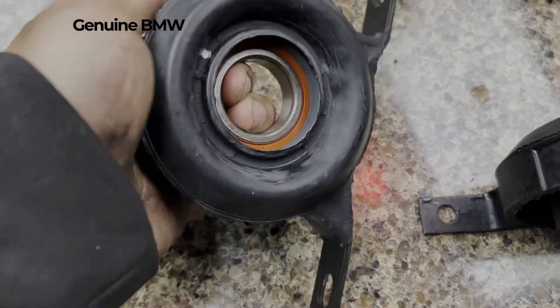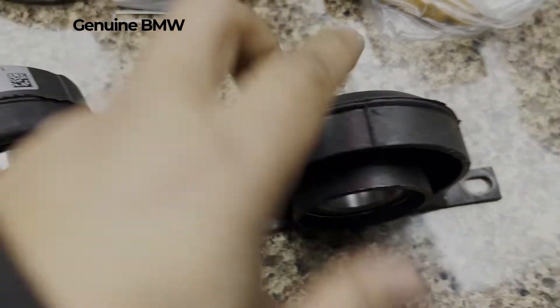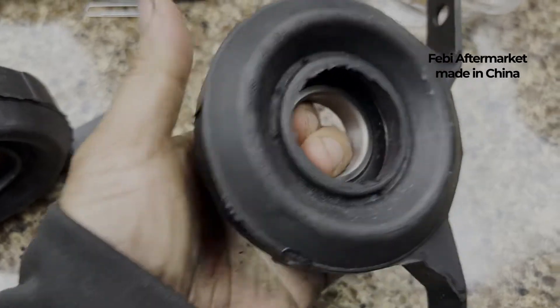When you try to press the bearing, it will not budge. It's very, very strong. Whereas on the Fabie, you can deform it.